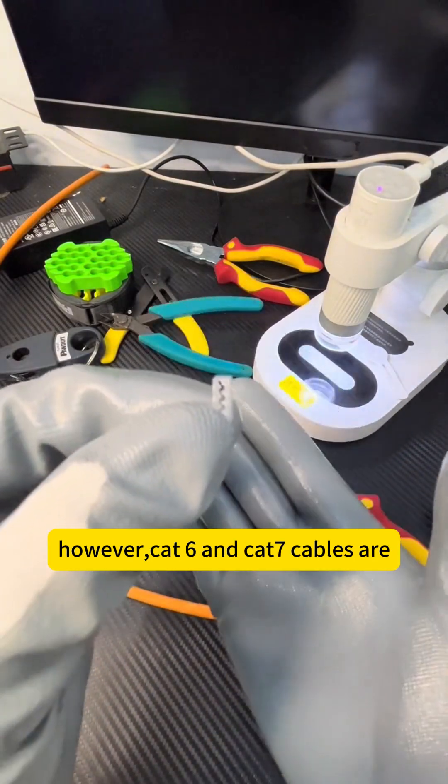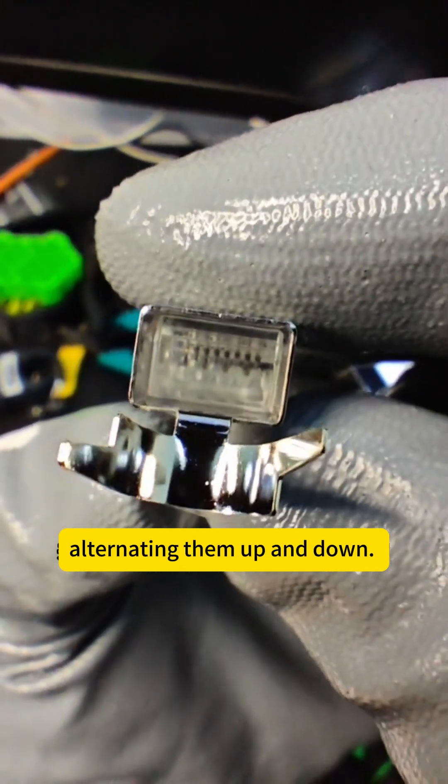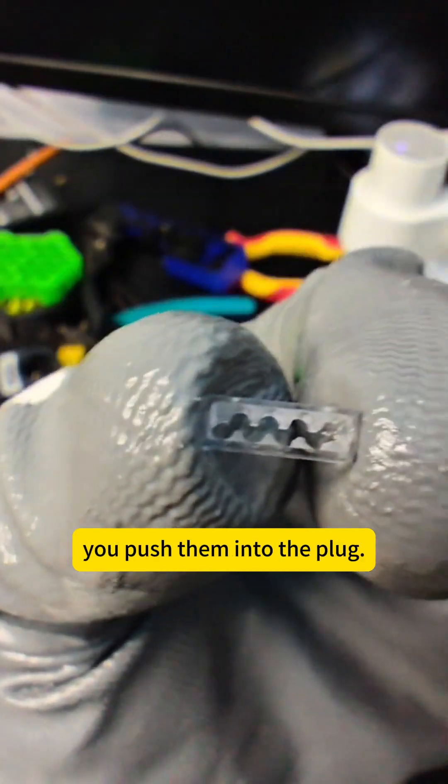However, CAT6 and CAT7 cables are thicker, and pushing the wires in side by side won't fit inside the plug. So, you have to stagger the wires, alternate them up and down. This is why the wire guide is important. It helps organize the wires in advance, preventing them from getting jumbled when you push them into the plug.